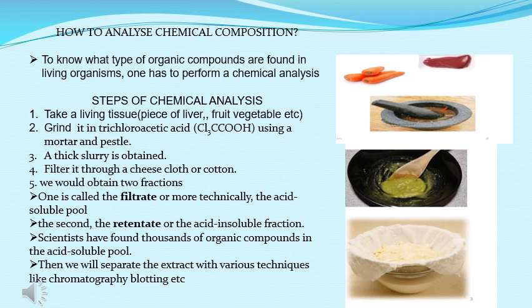When we are talking about chemical analysis, a question arises: how to analyze the chemical composition of organic compounds? Hamein kaise pata chale ki kaun se chemical se ya kaun se compound se, kaun se element se mil kar bana huwa hai. There are various steps involved in chemical analysis. The first step is taking a living tissue — koi bhi living tissue ho sakti hai, animal tissue ya plant tissue. For example, hum plant tissue ke andar fruit or vegetables le sakte hai.